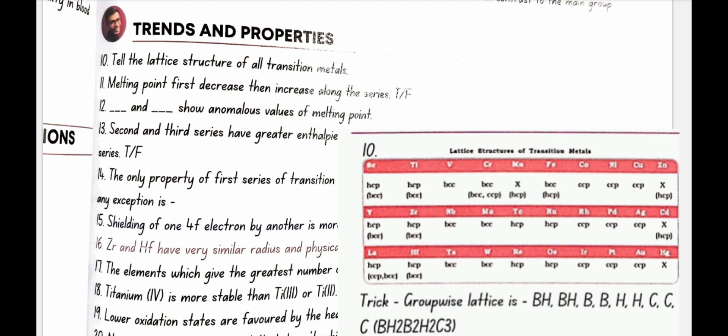the trick is BH, BH, BB, HH, CCC. So here B is for BCC, H is for HCP and C is for CCP.